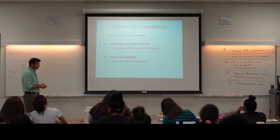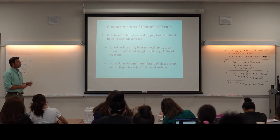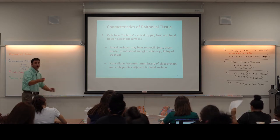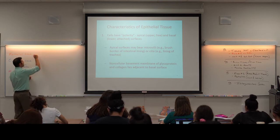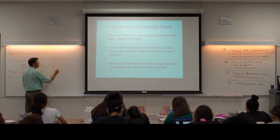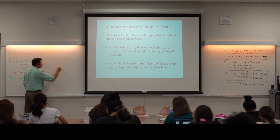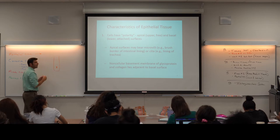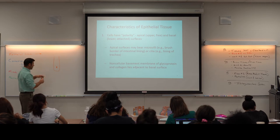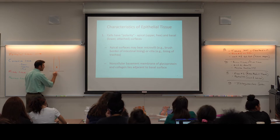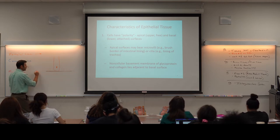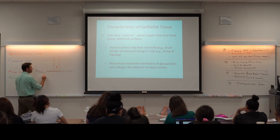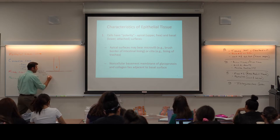We find epithelial tissue at places where the body surface meets a different environment — outside and inside body surfaces as well as glandular tissue. The first characteristic is called polarity. It shows that in epithelial tissue, the cells have polarity to them — meaning different sides of a cell are going to be doing different functions. Epithelial tissue is always anchored down to some type of basement membrane, which is made out of connective tissue — specifically that areolar tissue.